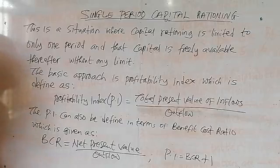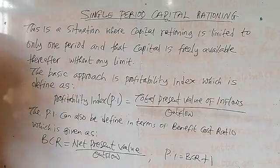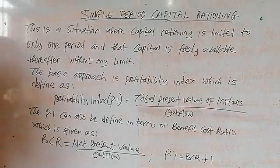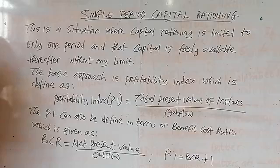In the last video, I also talked about the types of capital rationing, where we said we have single-period and multi-period capital rationing. A single-period capital rationing is a situation whereby there is a limitation of funds for a single period — just one period — after which there will be freely available funds for the company to use to finance its operations.